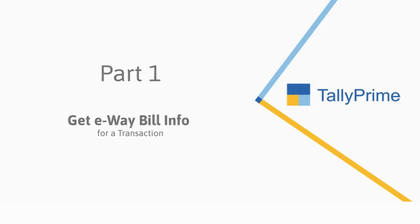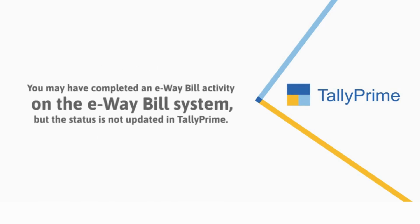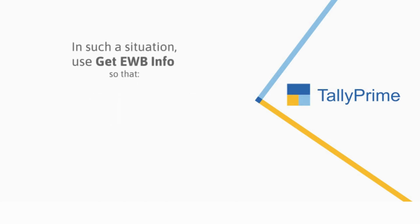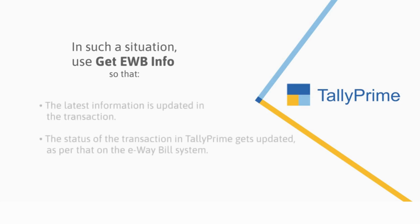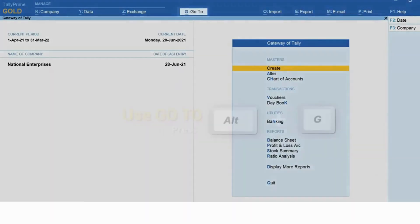Let's first see how to get e-way bill information for a transaction. You may have completed an e-way bill activity such as generation or cancellation for a transaction on the e-way bill system or using any medium other than Tally Prime. However, the status of that transaction in Tally Prime is still pending. In such a situation, you can use the 'Get E-way Bill Information' option and the latest information will get updated in the transaction in seconds.